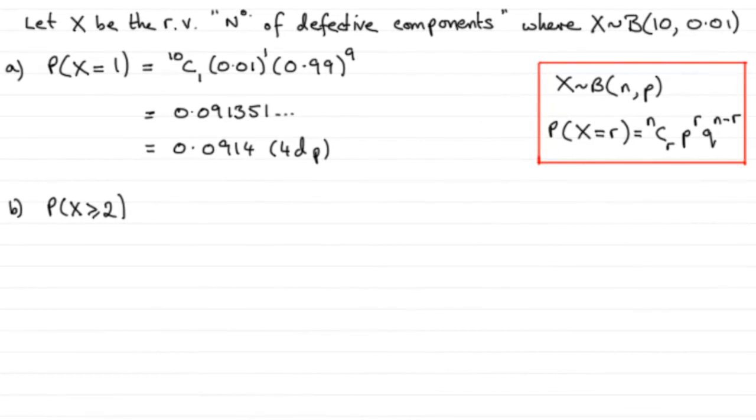Now for the next part, we need to find the probability that there are at least two defective components in the box. In other words, that's going to be the probability that x is greater than or equal to 2.